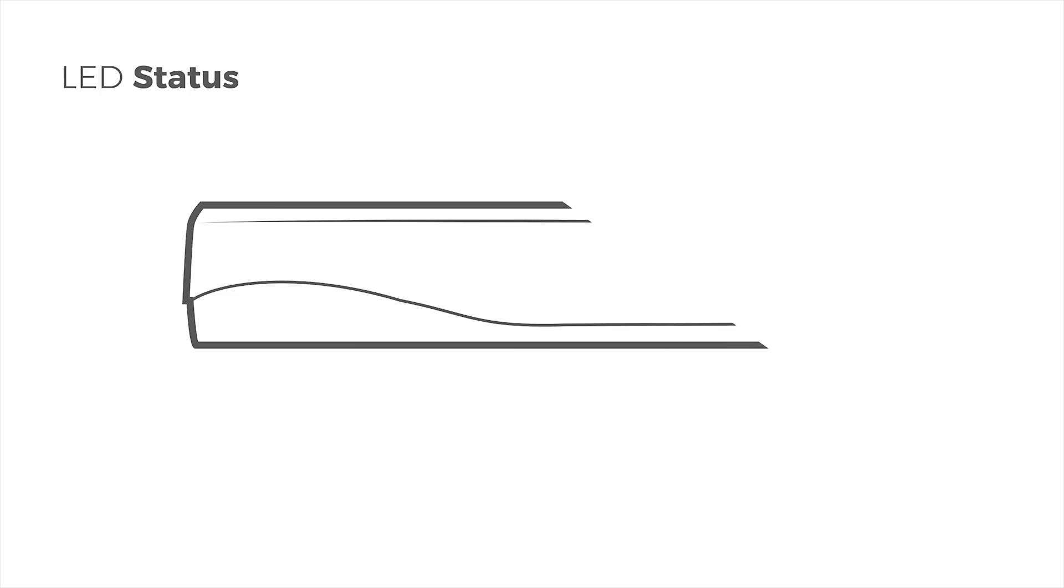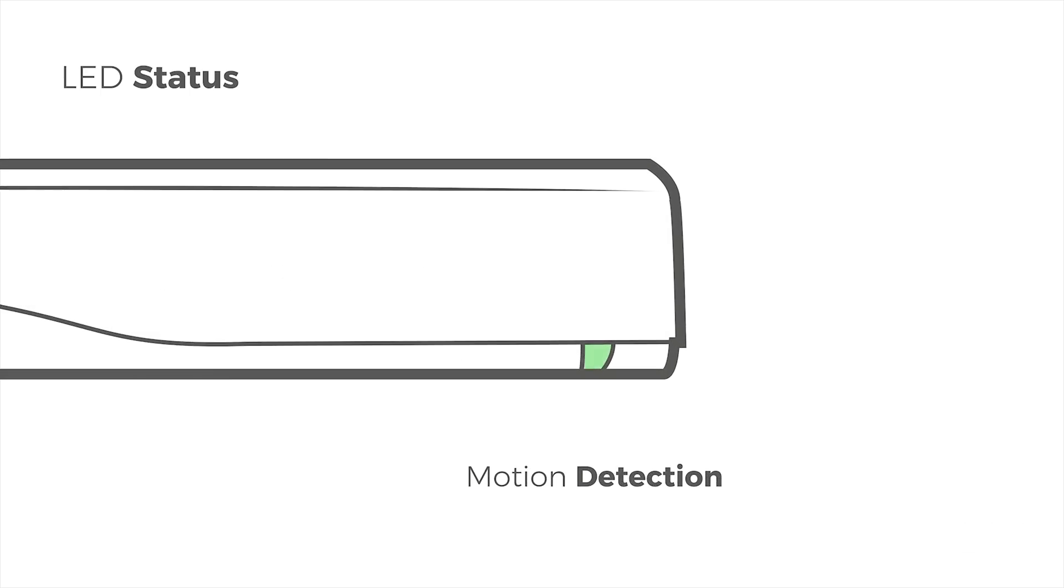An LED signal also indicates the detection status. The green LED indicates motion detection, and the red LED signals a presence detection in the safety field.